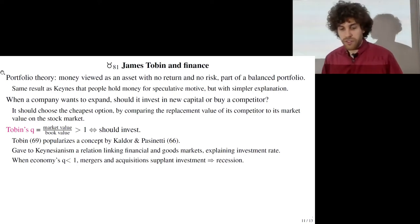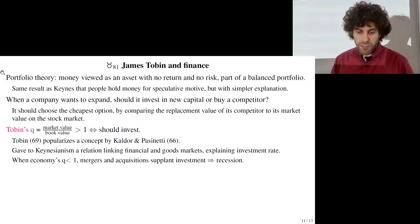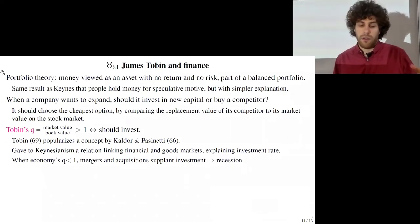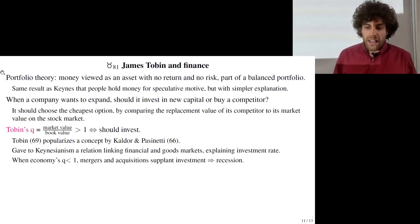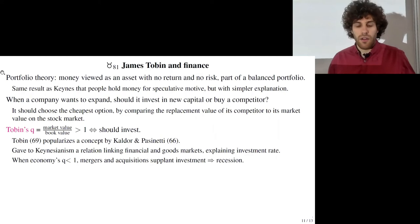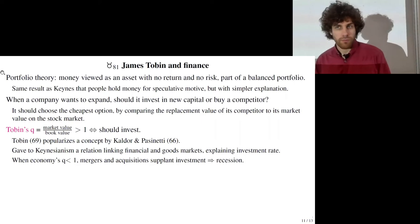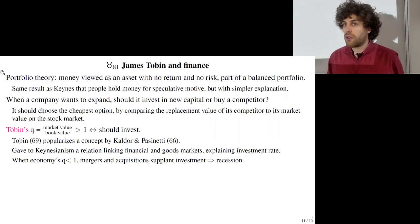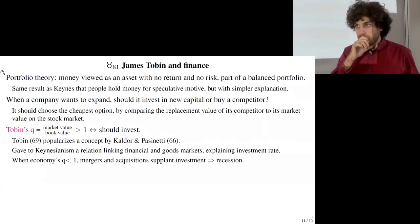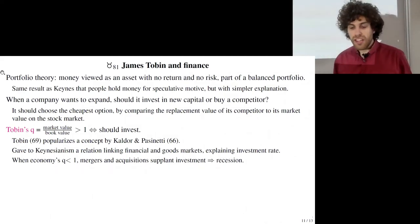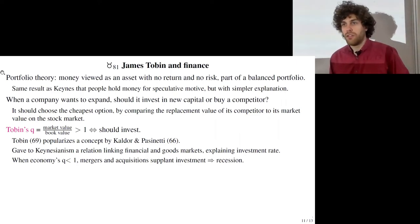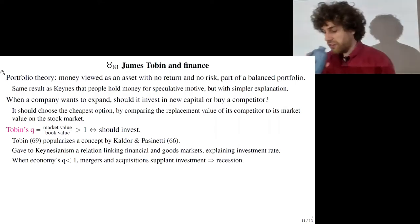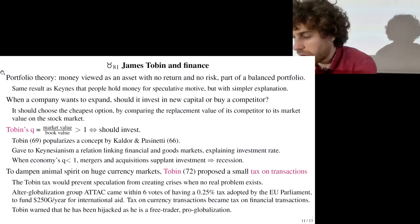This concept was already introduced by Kaldor and Pasinetti, but Tobin popularized it. It gives a link between financial markets and goods markets in Keynesianism, explaining the investment rate. If the stock market is undervalued and Q is below 1, firms should buy competitors rather than invest themselves, leading to mergers and acquisitions instead of investment. According to Keynesian theory, this leads to a recession — linking stock market prices to recessions and the level of output.